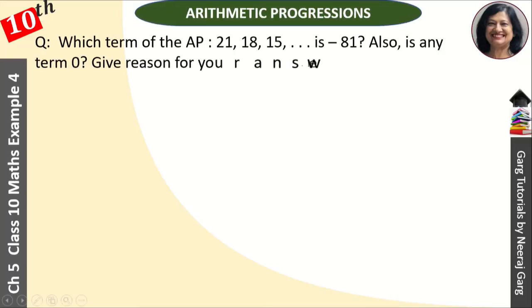Hi, this is Neeraj Gag and you are watching class 10th chapter 5 Arithmetic Progressions. Which term of an AP 21, 18, 15... is minus 81? Also, is any term 0? Give reason for your answer.